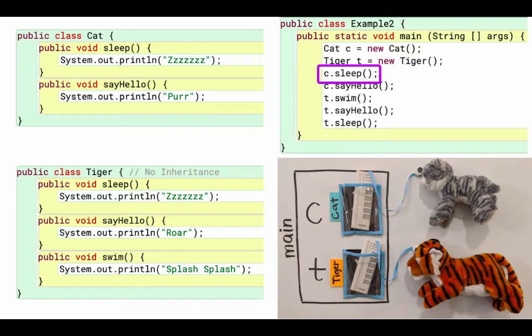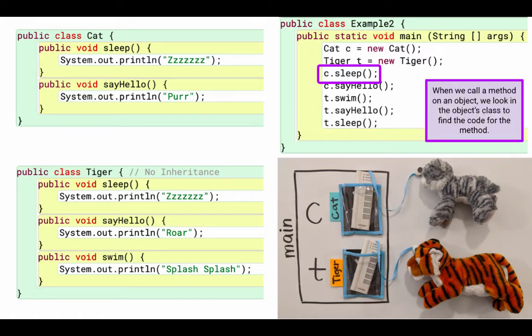Now, I want to trace through the code, so it says c.sleep. And remember, when we call a method on an object, we look in the object's class to find the code for that method.